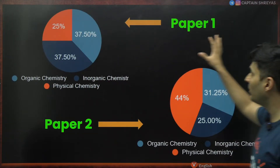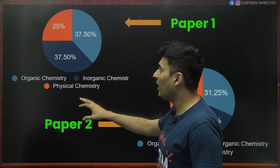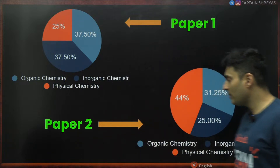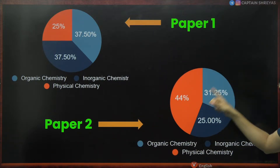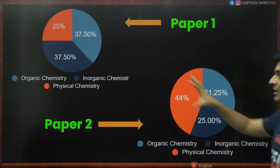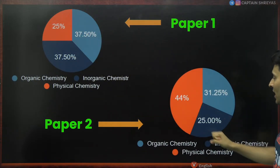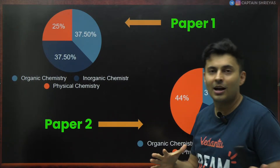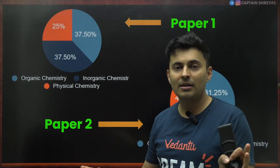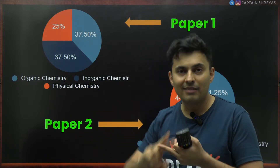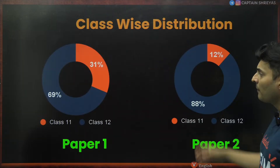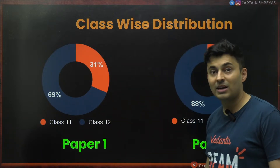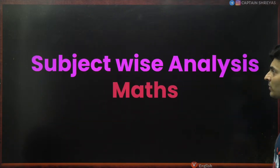In Chemistry, Paper 1 was dramatic: 37% each from organic and inorganic chemistry, and physical chemistry was the least. In Paper 2, the distribution shifted drastically — 44% was physical chemistry, and inorganic was the least. IIT Kanpur really played around with the weightage and class-wise distribution, with barely any Class 11 questions in Paper 2 and 31% from Class 11 in Paper 1.